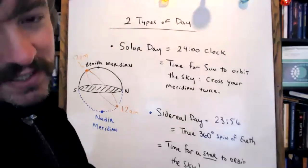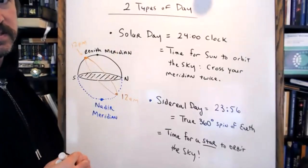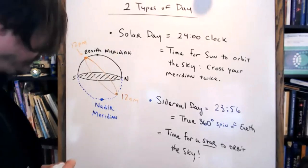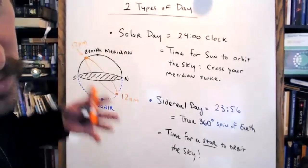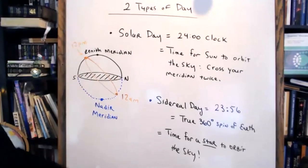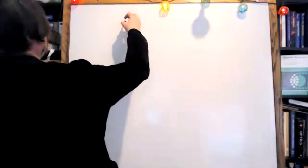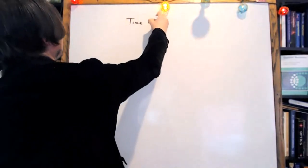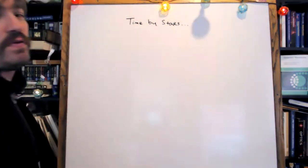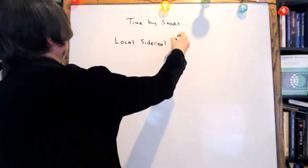That's where local sidereal time comes in. You might be crazy enough to keep time by the stars. Let me introduce local sidereal time. One of our homework problems today deals with local sidereal time. It's useful for astronomers — for instance, if you're at a telescope and trying to plan observations, like when Betelgeuse will rise, cross your meridian, and set.